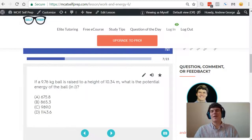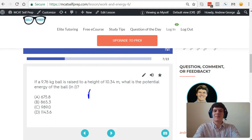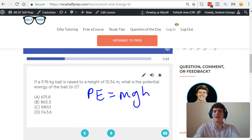Whenever you are asked about potential energy on the MCAT, I want you to think about the potential energy equals mass times gravity times height equation.